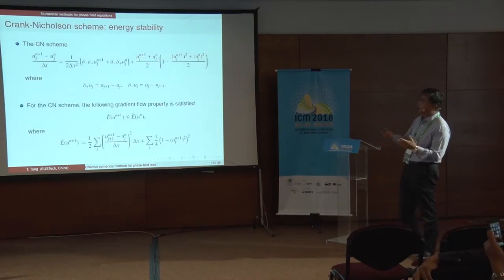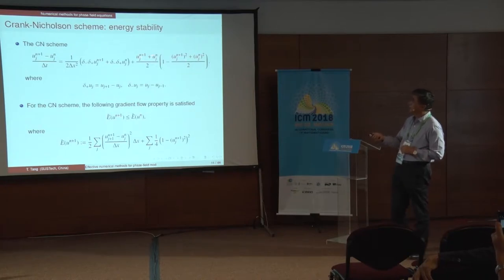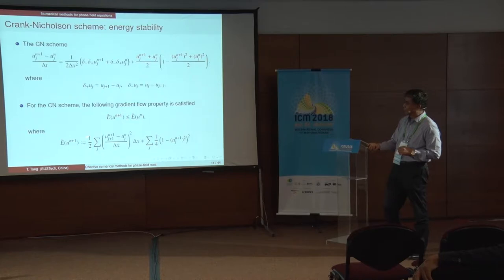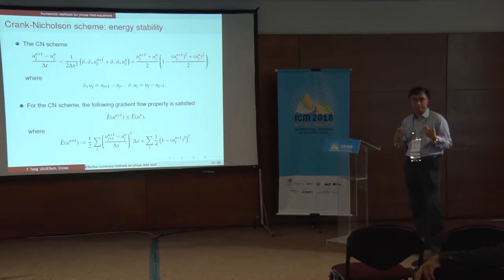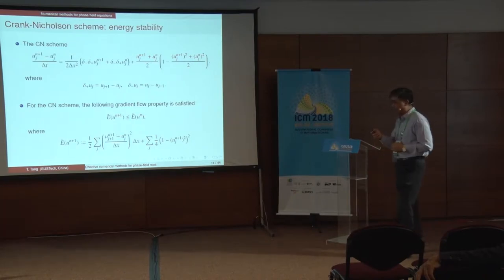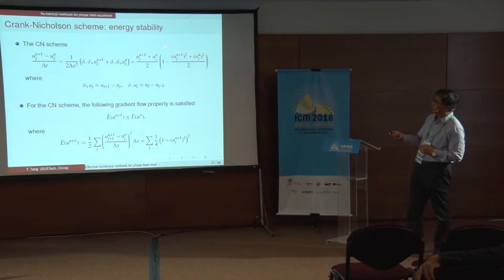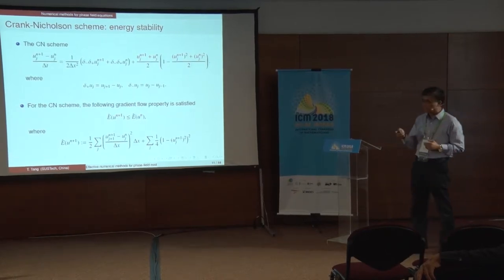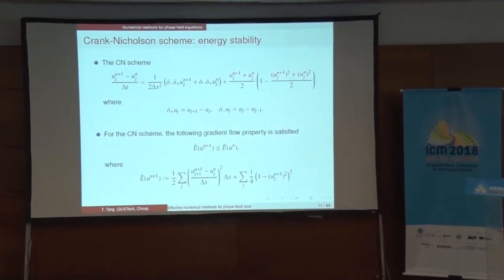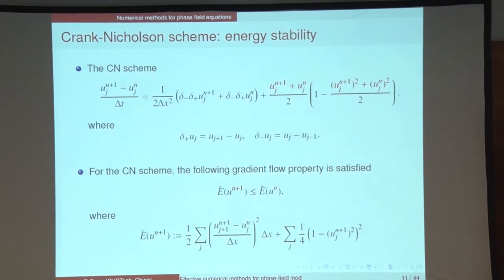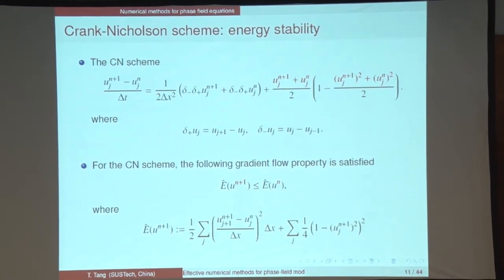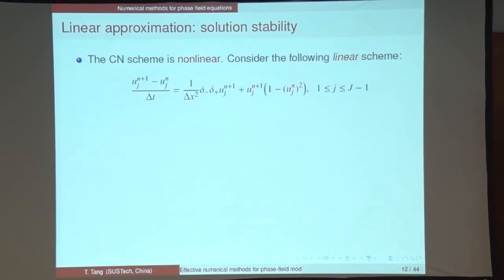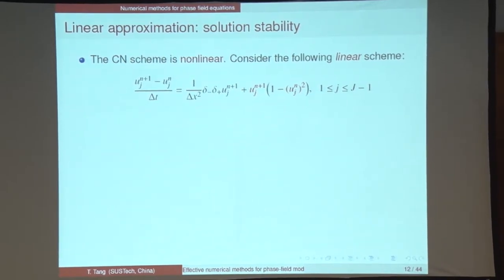Numerically, if I use a modified Crank-Nicolson scheme, I can prove rigorously that the discretized energy is decreasing with time. However, numerically we have a cubic nonlinearity on the right-hand side, so we must use some kind of iteration — fixed point or nonlinear solvers. This is not ideal. To get rid of the nonlinear source term, we use a semi-implicit linear scheme.